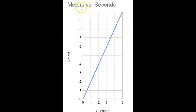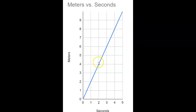Velocity is measured in meters per second. It can also be measured in miles per hour or feet per second, but today we're going to measure it in meters per second. Those of you doing physics will often use meters per second. If we look at this graph, we can see that after one second it's gone two meters, after two seconds it's gone four meters, after three seconds it's gone six meters.